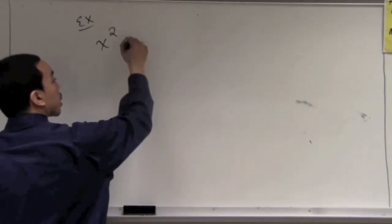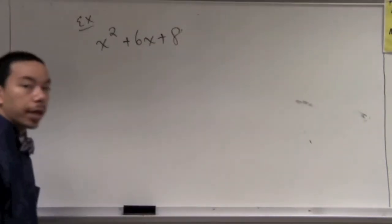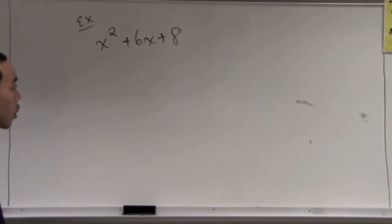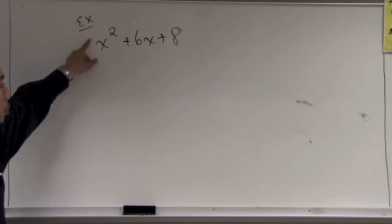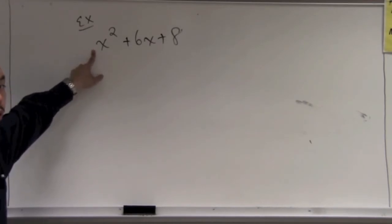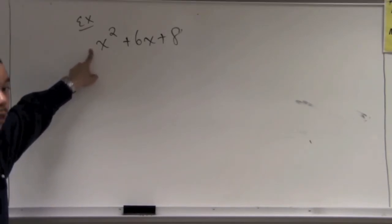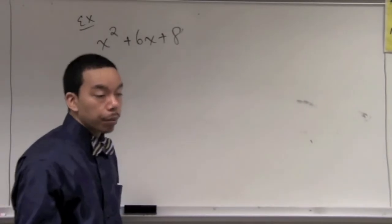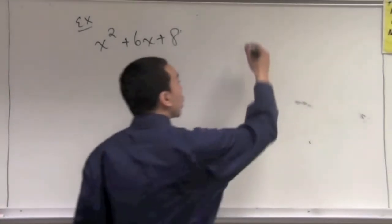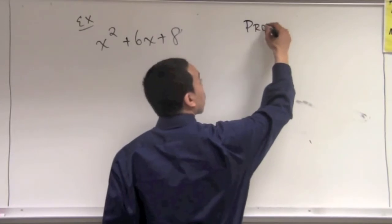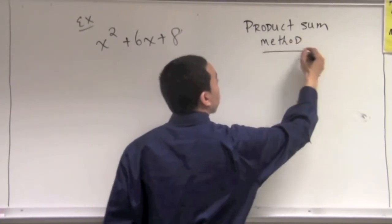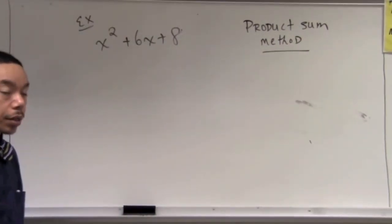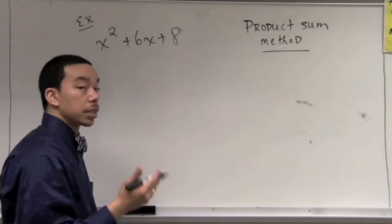So we have x squared plus 6x plus 8. We look at it and identify the leading coefficient — it is in fact a 1. There's nothing written in front of the x squared, so it's implied to be a 1. Therefore we can use this method. Many textbooks call it other names, but I'll call it the product-sum method. You can only use this method when the leading coefficient is equal to 1.